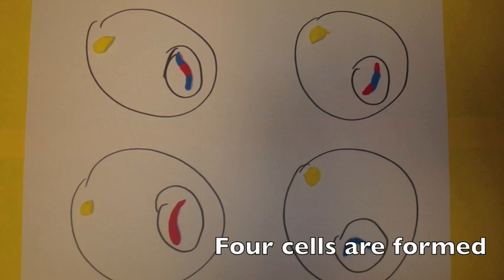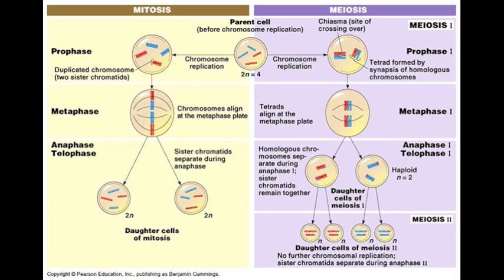At the end of meiosis, there are four haploid cells, each with 23 chromosomes.